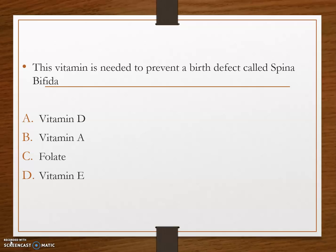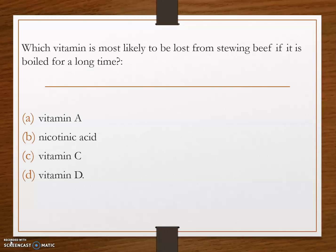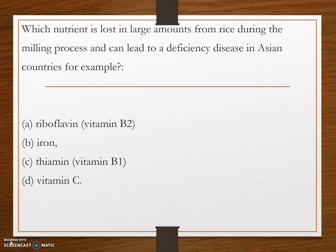Next question: which vitamin is most likely to be lost from beef if it is boiled for a long time? Option A, vitamin A; option B, nicotinic acid; option C, vitamin C; and option D, vitamin D. The answer is option B, nicotinic acid. Nicotinic acid is vitamin B3, otherwise known as niacin, and this vitamin will be lost if we cook or boil beef for a long time.